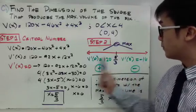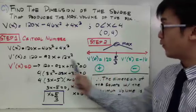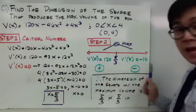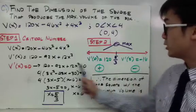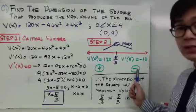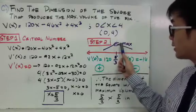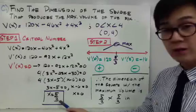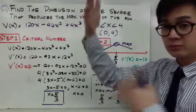On the sign chart for the first derivative: plugging in 0 (which is less than 5/3) gives a positive value of 120, meaning the function is increasing. Plugging in 2 (which is greater than 5/3) gives negative 16, meaning the function is decreasing. Since the function goes from increasing to decreasing at x equals 5/3, we have a maximum at that critical number. Therefore, the dimension of the square that produces the maximum volume is 5/3 by 5/3 inches — the sides are equal because the cut is a square.